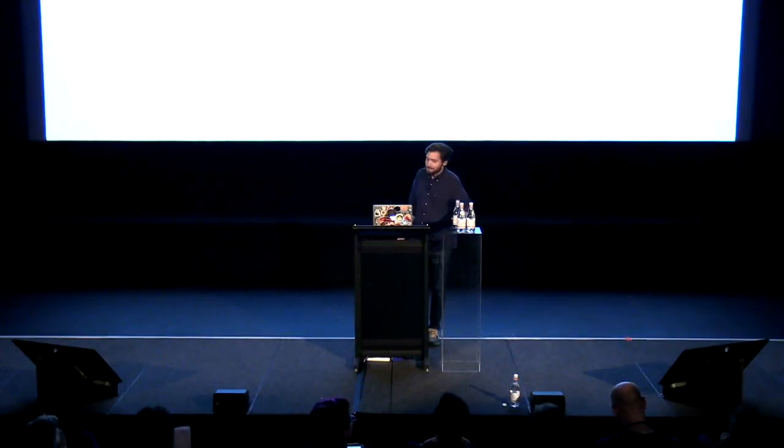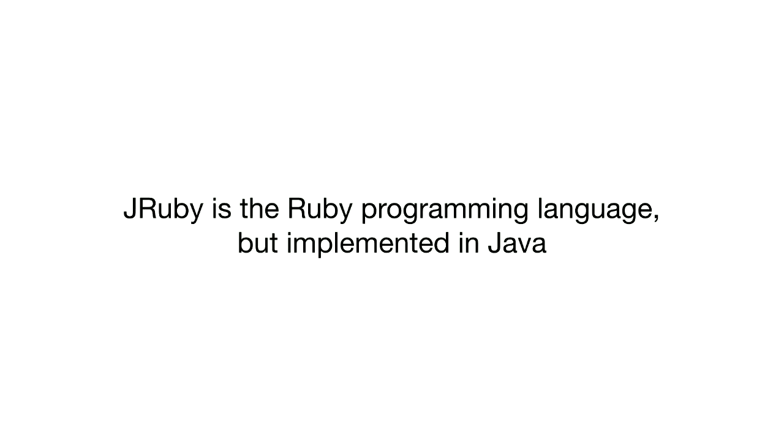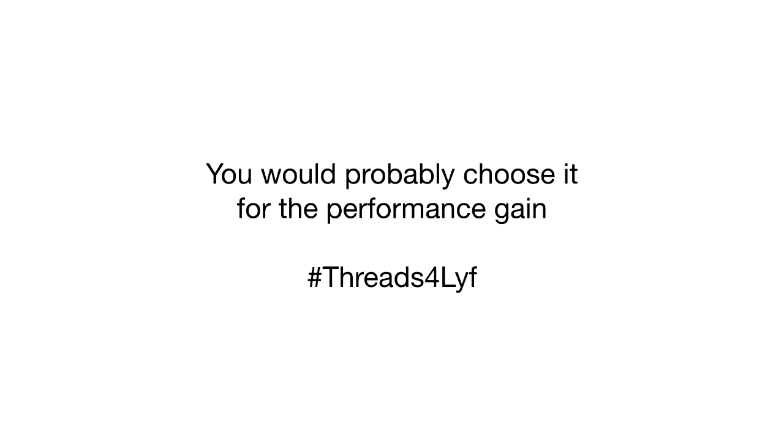So, let's wrap it up. There's a bunch of different Ruby implementations — they're just the Ruby programming language implemented in different ways. If a language can pass the Ruby specs, it's Ruby. JRuby is the Ruby programming language implemented in Java. It can run Rails. And you'd probably choose it for the performance gain — hashtag Threads for Life, let's get it trending.